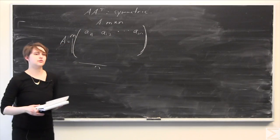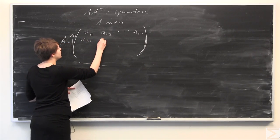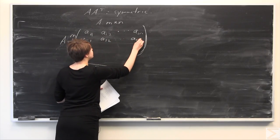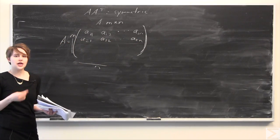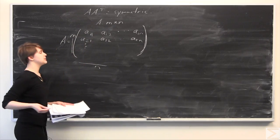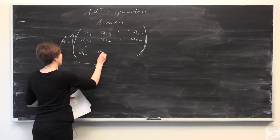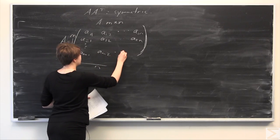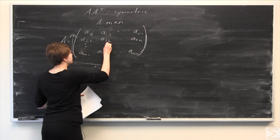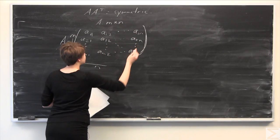We can repeat this process for the remaining rows. So we have the second row: A₂₁, A₂₂, and so on until A₂ₙ. The entire matrix can be expressed this way, all the way down to the final row, which — since we have m rows — goes A_{m1}, A_{m2}, and so forth until A_{mn}.